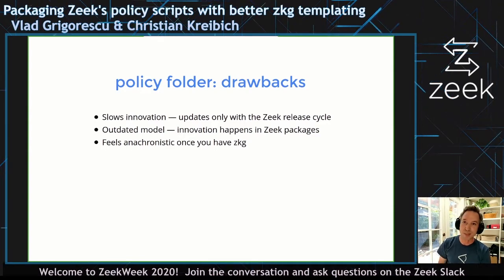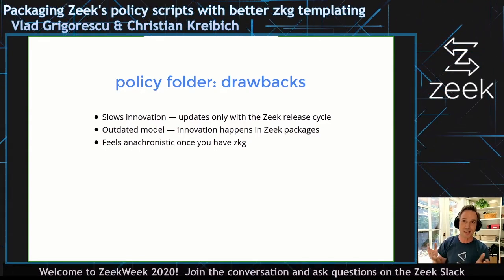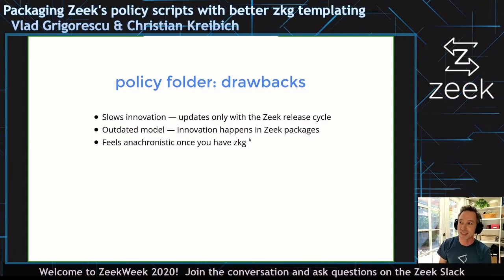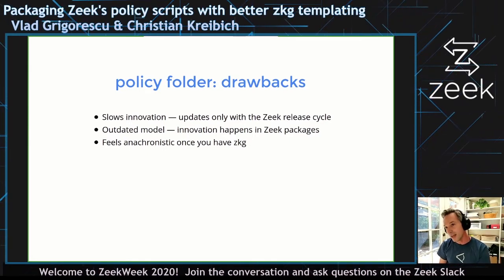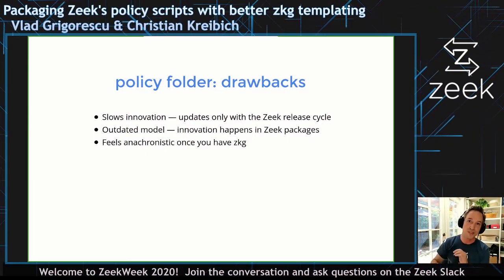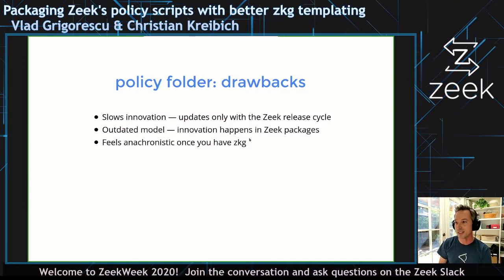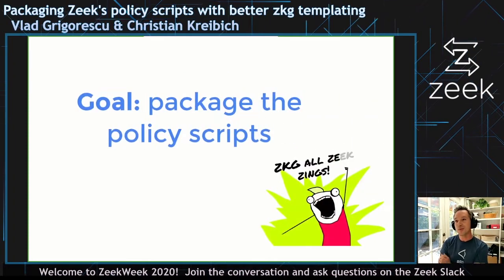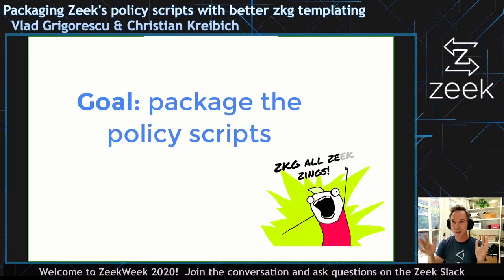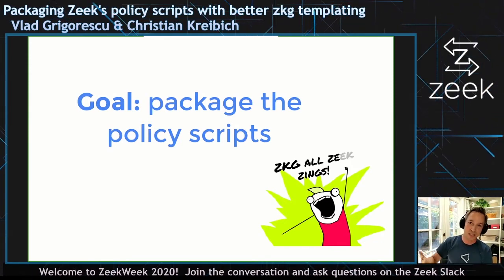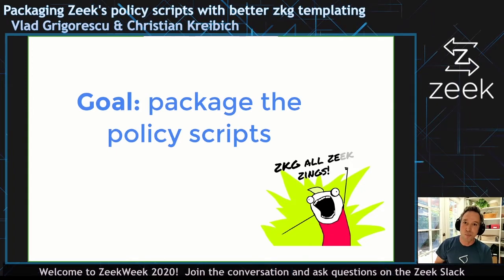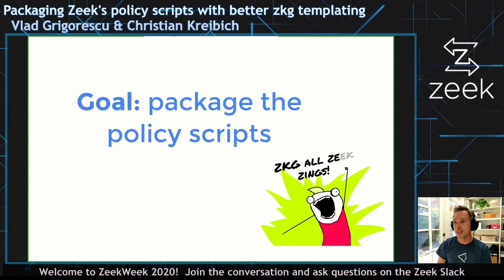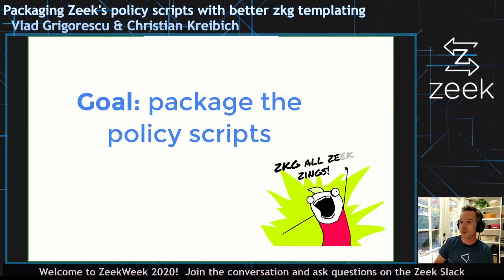We hardwire all this stuff into the Zeek distribution, so we can only change it whenever we update the distribution. The whole model is sort of outdated because today, innovation in the scripting layer is supposed to happen in Zeek packages. If you've ever used ZKG, this idea of going into local.zeek and editing lines feels outdated. The goal we have here is to really package up the policy folder, migrating its contents over to ZKG incrementally over time to allow quicker iteration.